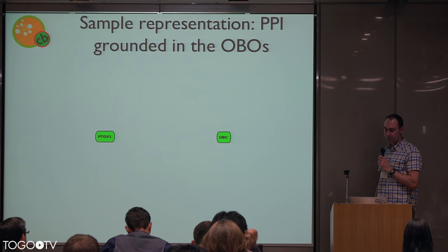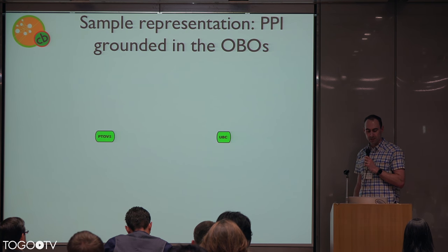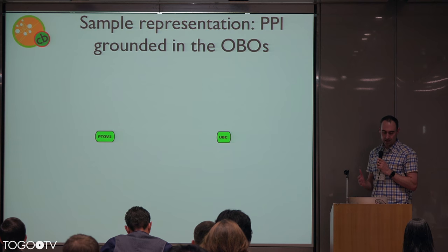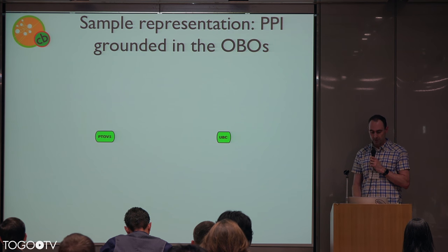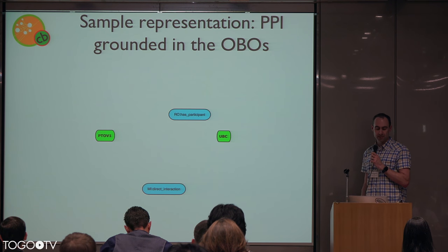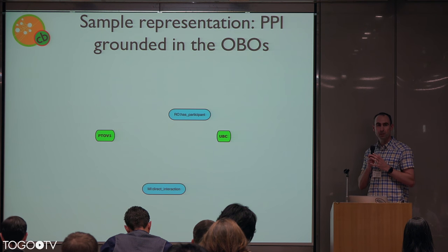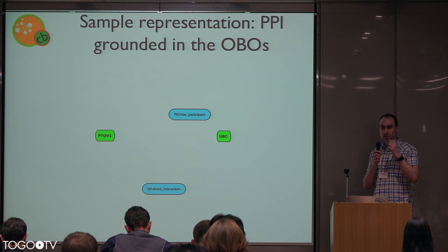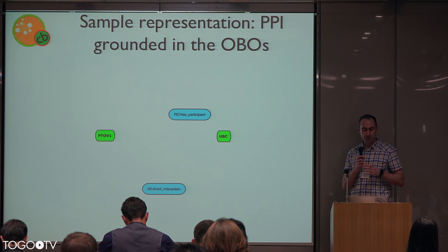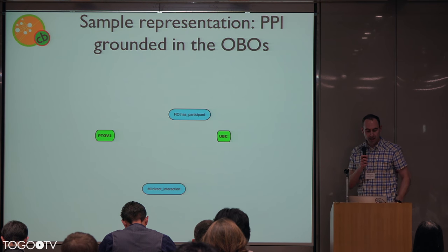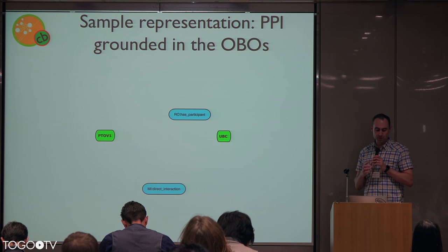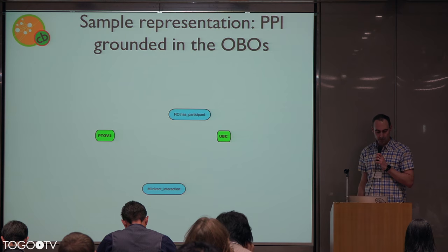So for our knowledge representation, we're interested in modeling the interaction between two proteins represented by the two green boxes on the screen. The OBOs are modeled in OWL, so we're going to do the same here. As a design decision, KEBAB models things in a process-centric manner, or really an event-centric manner, as opposed to an entity-centric manner. So we're going to model this protein-protein interaction as an interaction event that has as participants the two proteins, as opposed to modeling one protein directly interacting with another.